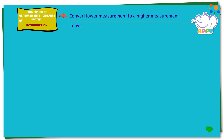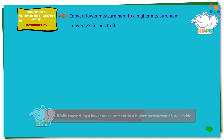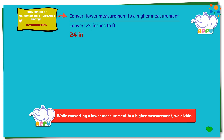Convert 24 inches to feet. While converting a lower measurement to a higher measurement, we divide. Here we need to find how much is 24 inches in feet. We know that 12 inches equals 1 foot.